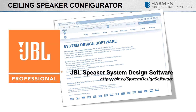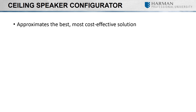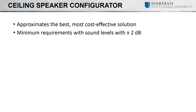The JBL Pro Ceiling Speaker Configurator, also known as CSC, yields introductory information about which ceiling speaker models can be used for multiple in-ceiling distributed applications to achieve the desired level and coverage in an economical manner. This is achieved by running simulations in the software against user data entered about a room. Due to certain criteria, this software tool is used to only approximate the best, most cost-effective solution, with sound level results within plus or minus 2 dB. If more exact computations are required, the distributed system design software by JBL is recommended.